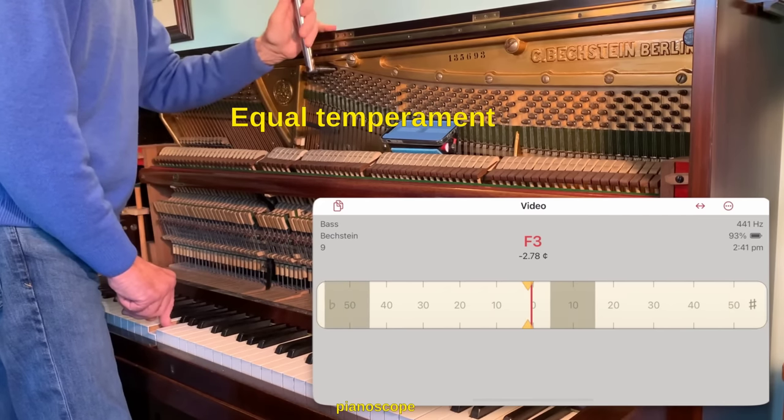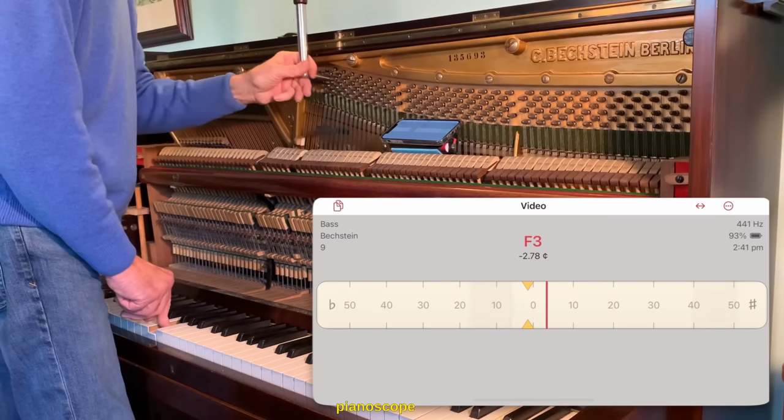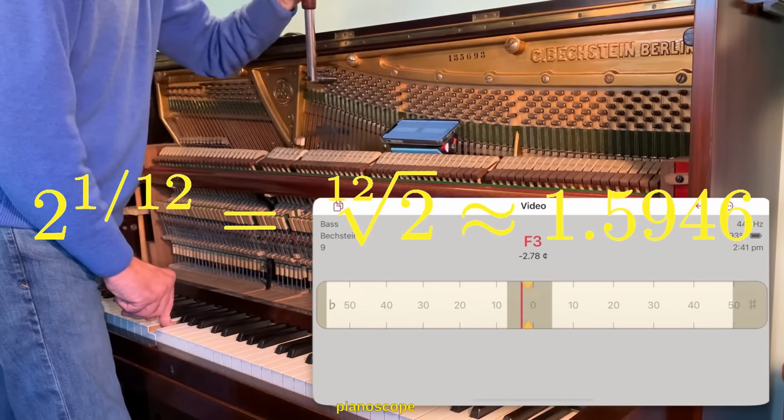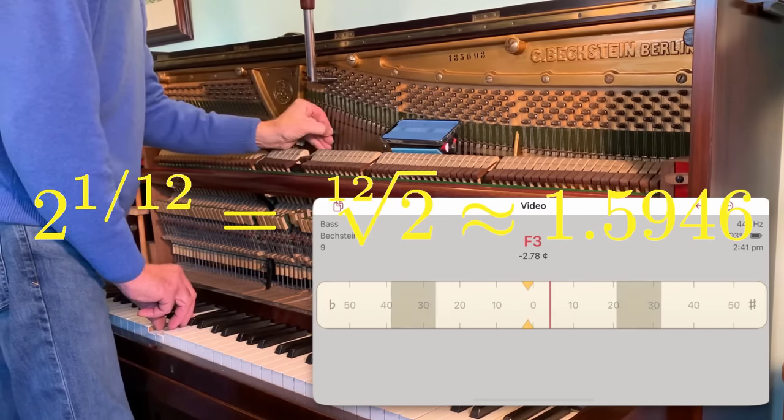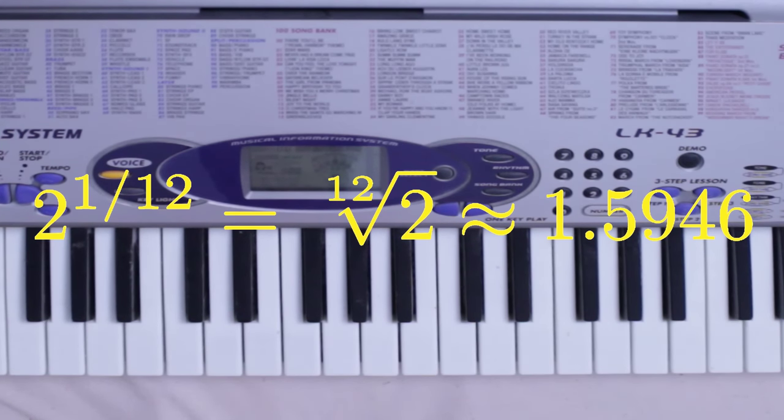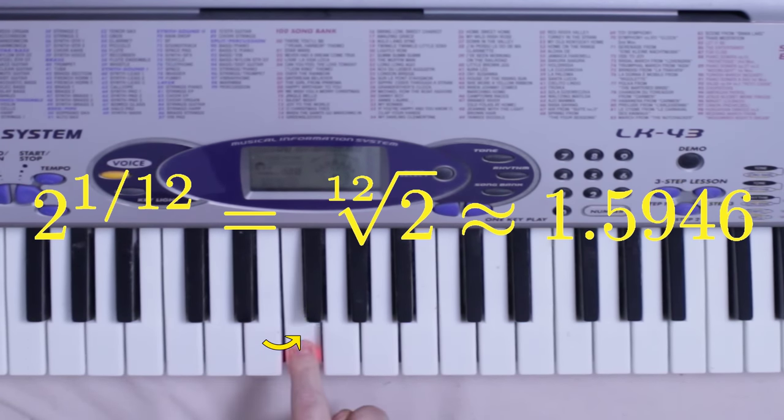In equal temperament, the interval between any two successive notes is always the 12th root of 2. Interval means the ratio of frequencies between two notes. In other words, this interval is 12th root of 2, or 2 raised to the 1/12th power. So is this, and this, and this, and this.